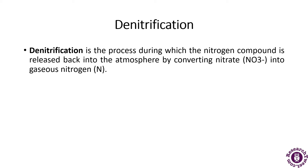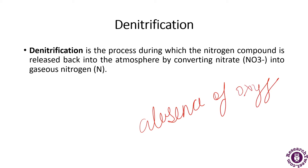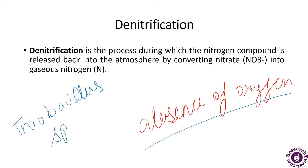This particular step is carried out during the absence of oxygen by Thiobacillus species such as Clostridium bacteria, which are present in the soil. In this process, the genus of gram-negative bacteria degrades nitrate compounds present in the soil and aquatic systems into nitrous oxide, that is N2O, and nitrogen gas, which are released into the atmosphere.